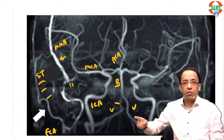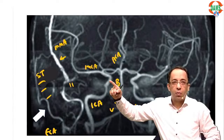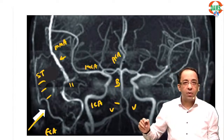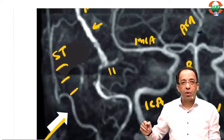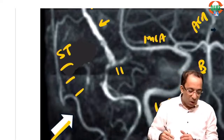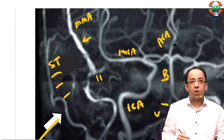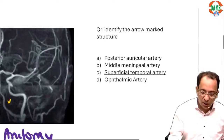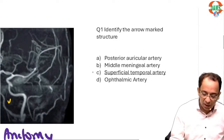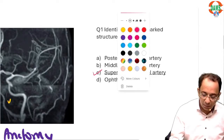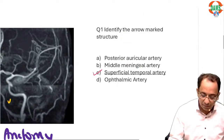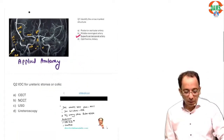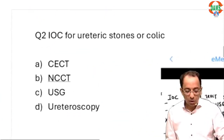We asked a lot of students which artery was marked — we did this in the live video as well. Most agreed that the outermost vessel was marked, so the best answer is the superficial temporal artery. That was the answer to the first radiology question.